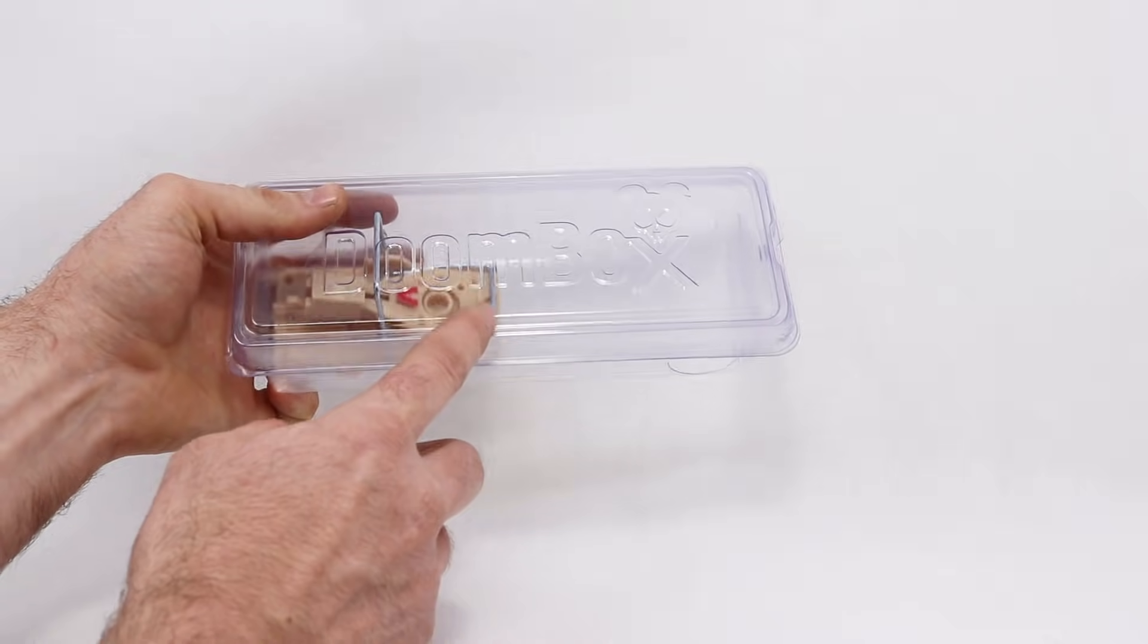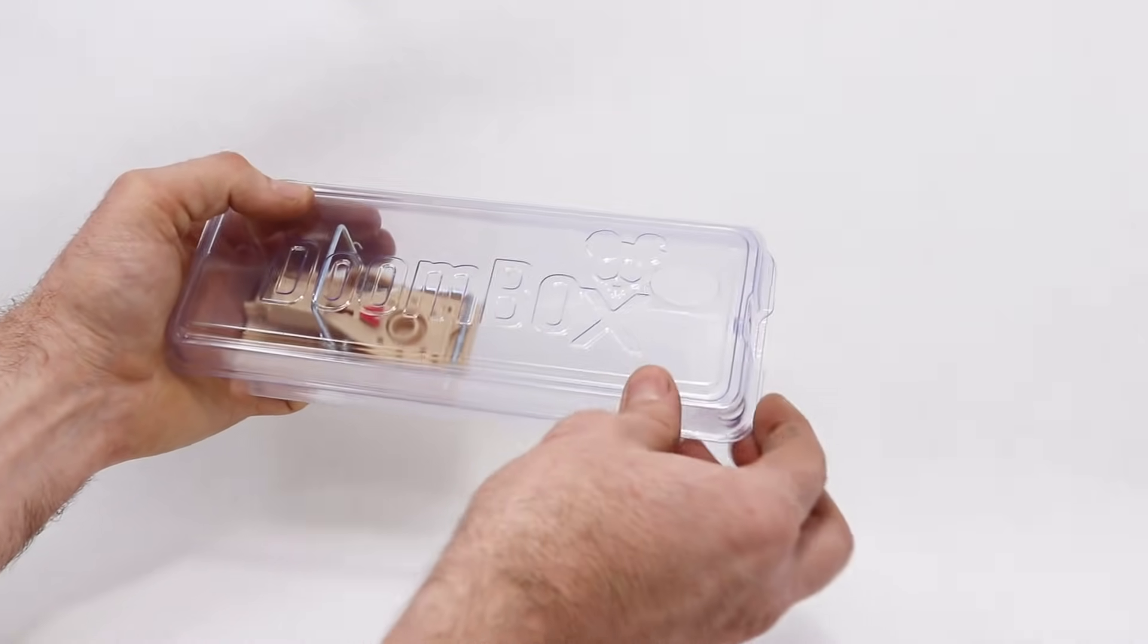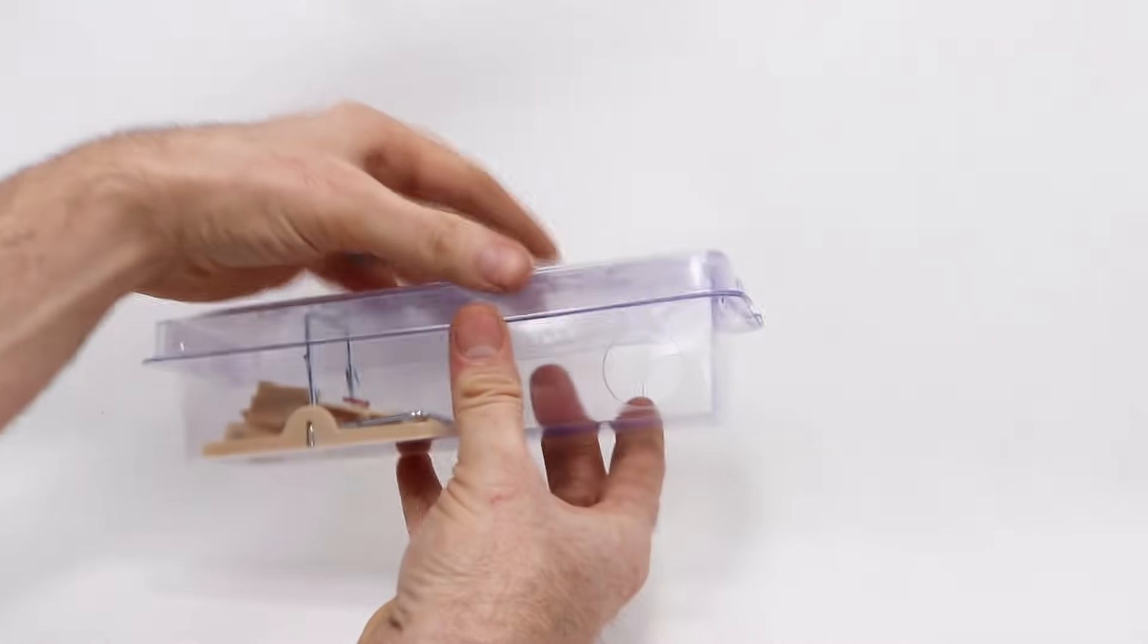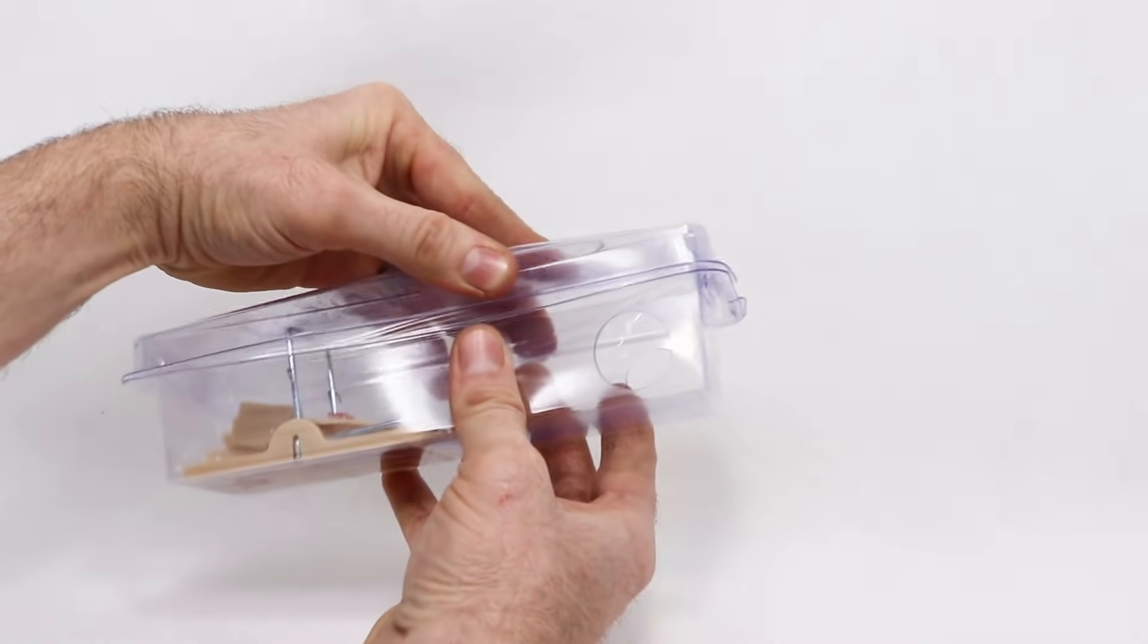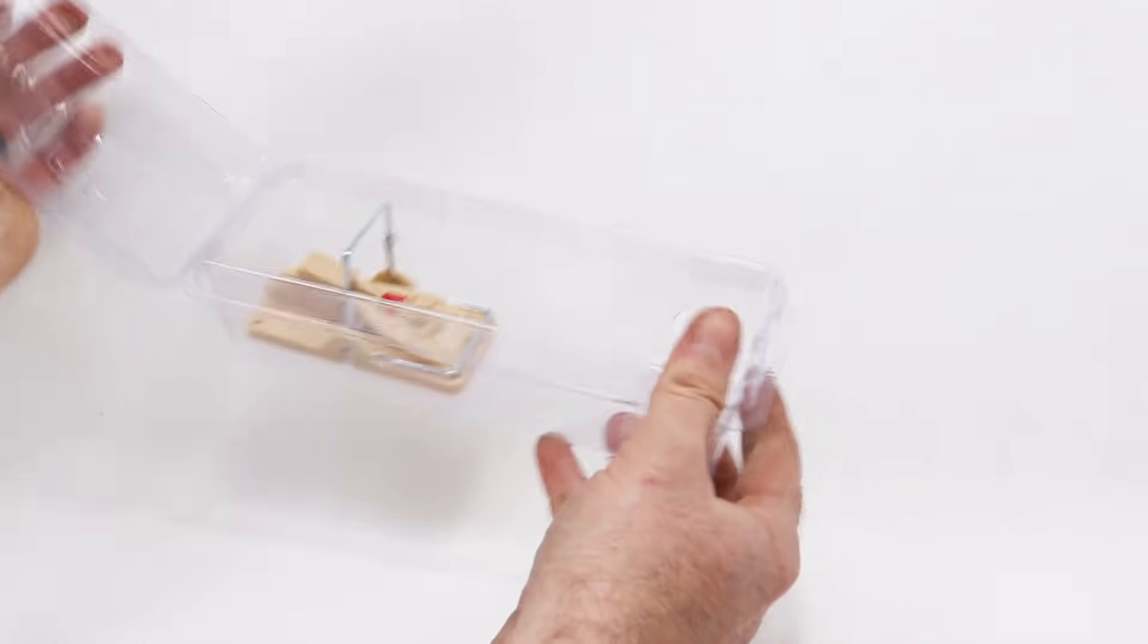There's a lid. It says Doom Box on top and they really want to highlight they have a patented locking system on the lid. So it doesn't just flip open, it's pretty secure. But if you push this up front, it swings open and you can get to the trap.